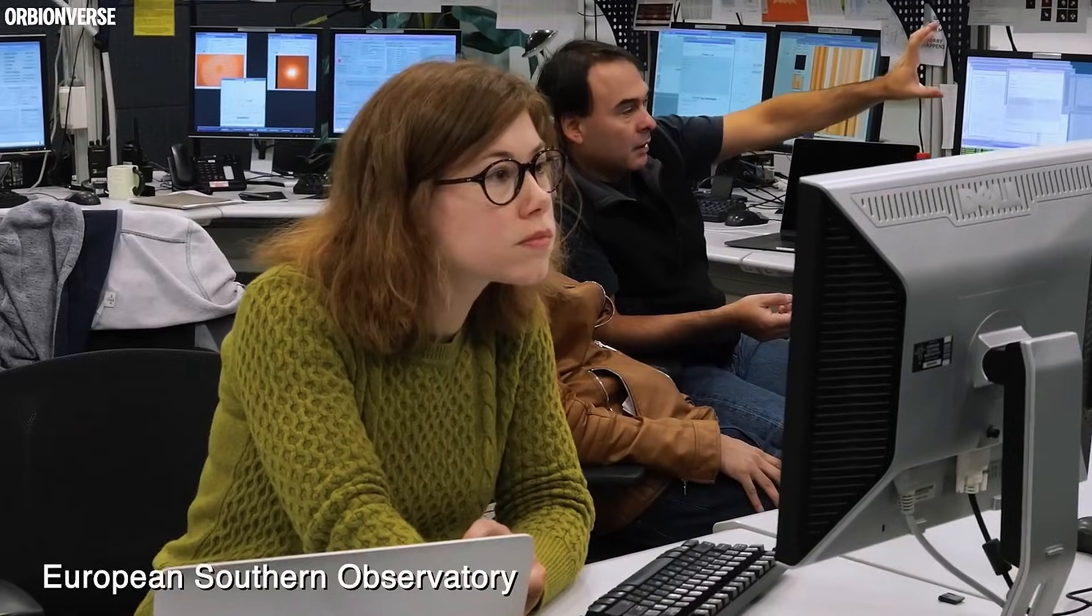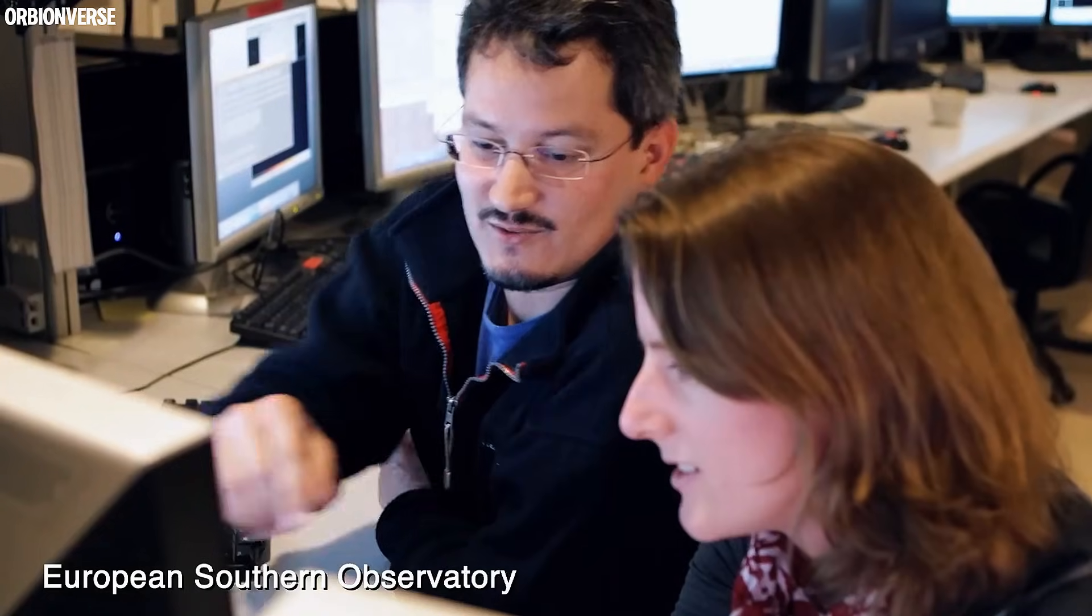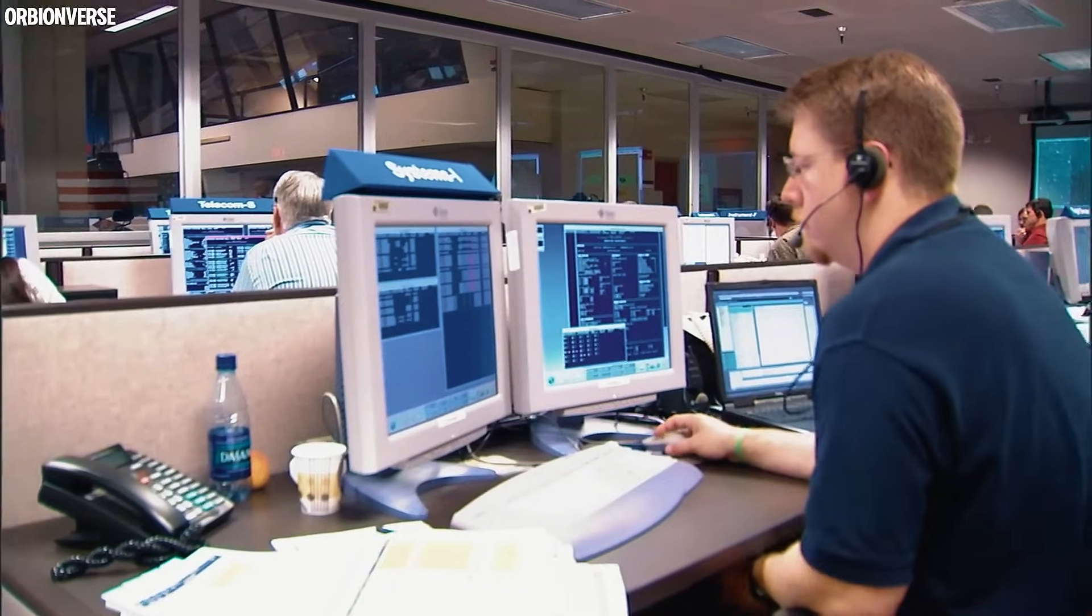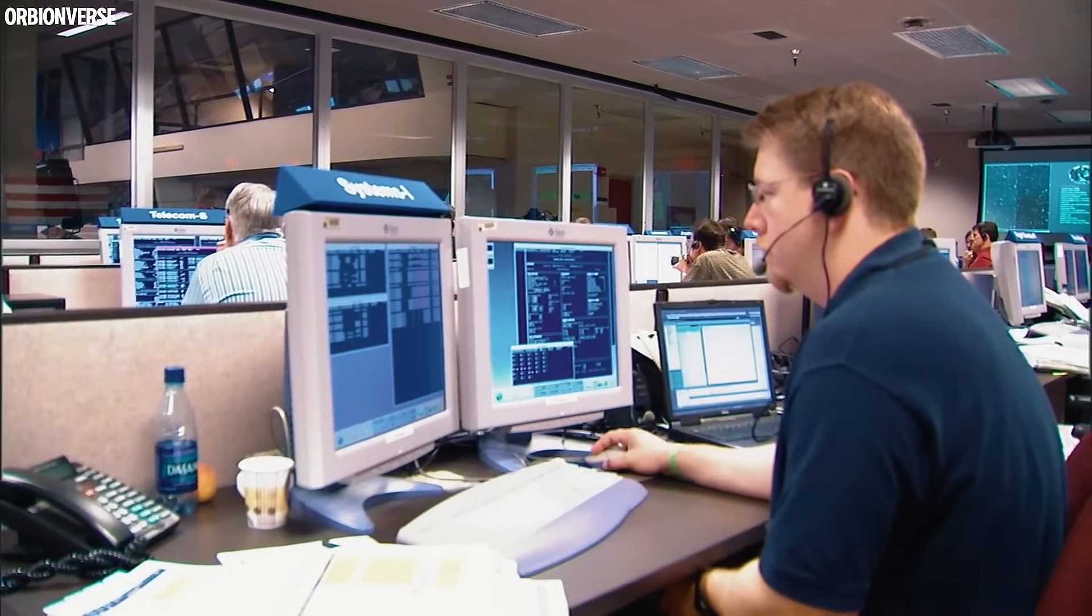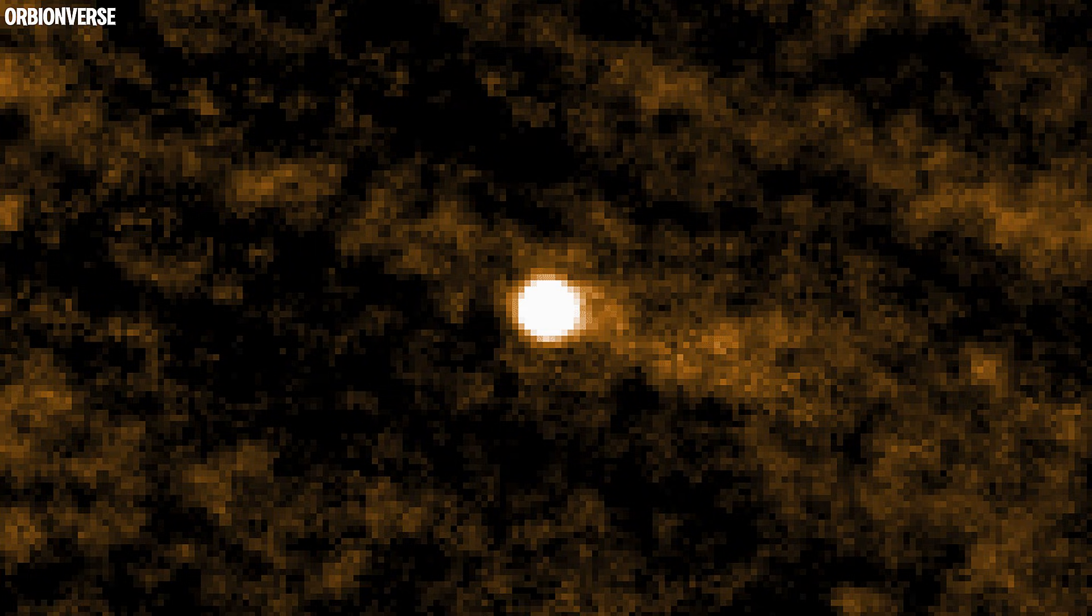Photographers who captured the comet recently noticed something else. When they reduce brightness, the comet almost disappears entirely, leaving behind a tiny rotating core. But as soon as any processing is applied, the core becomes bright again. Almost unnaturally bright.